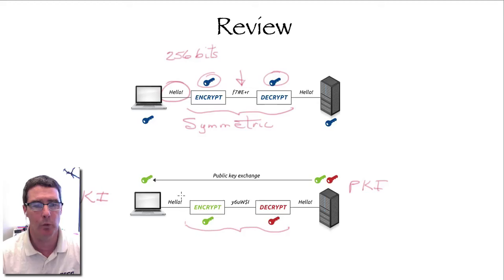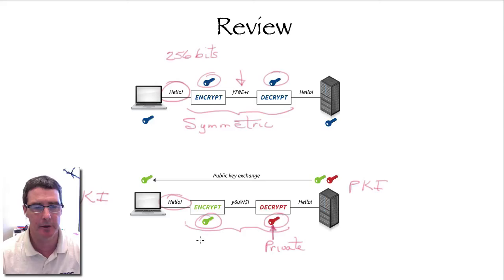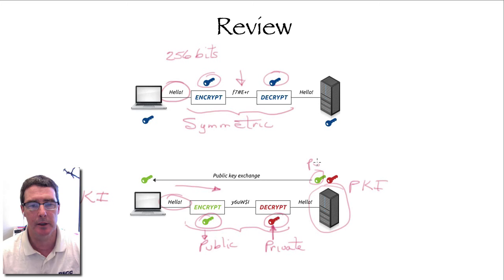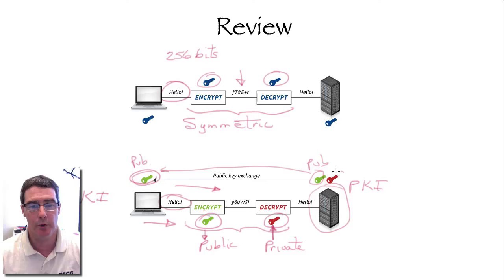PKI uses two keys. When we have plain text, we use one key to encrypt but a different key to decrypt. The decryption key is your private key, and your encryption key is generally your public key that you distribute. If information is going to come to an end user, they distribute their public key out to the world. Anyone can get it, and if another party wants to send communication to that device, they simply use the public key to encrypt the information. The private key is kept secret; when they receive the information, they use the private key to decrypt.